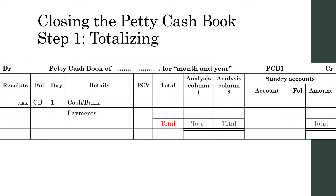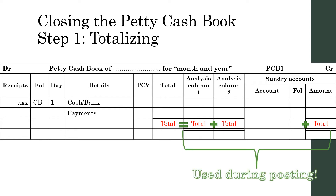Step 1: Totalizing. First find the total petty cash spent, and then the totals of the analysis columns and the sundry accounts section. When you add the totals of the analysis columns and the sundry accounts section, it must give you the same as the total petty cash spent. This part will later be used for posting from the petty cash book to the ledger accounts in the general ledger.